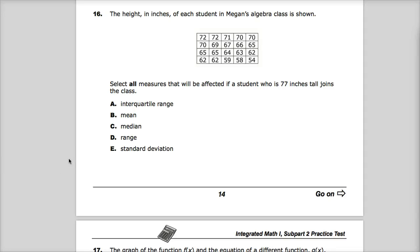This is question number 16 for the Integrated Math 1 practice test, subpart 2, so we're going to use a calculator here. The question says the height in inches of each student in Megan's algebra class is shown. Select all measures that will be affected if a student who is 77 inches tall joins the class.